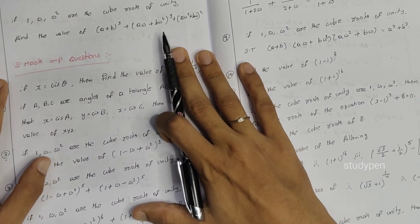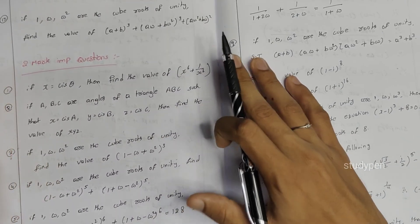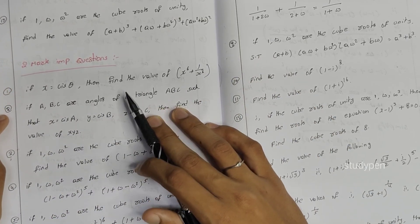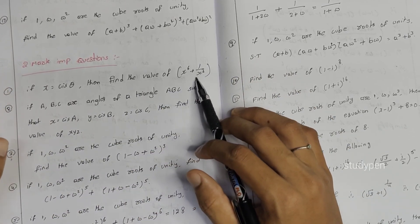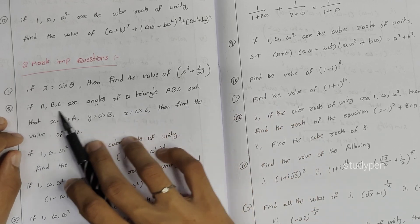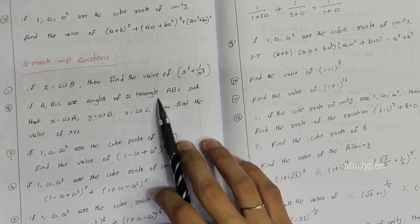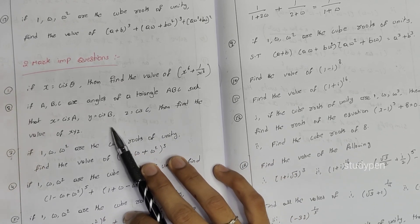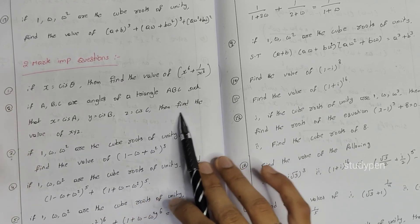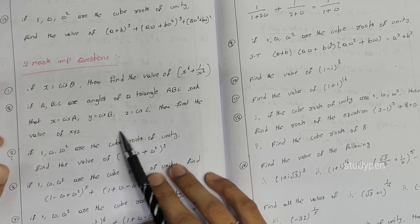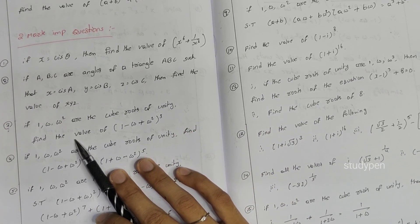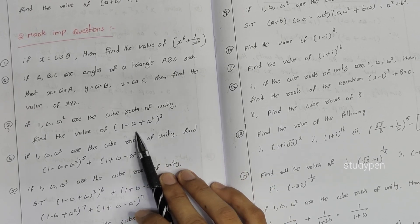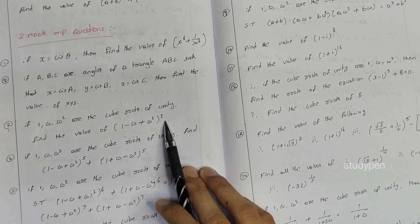Now for the 2-mark questions. First: if x = cis(θ), find the value of x^6 + 1/x^6. Next: if a, b, c are the angles of a triangle such that x = cis(a), y = cis(b), z = cis(c), then find the value of xyz. And: if 1, ω, ω² are the cube roots of unity, find the value of (1 − ω + ω²)³.